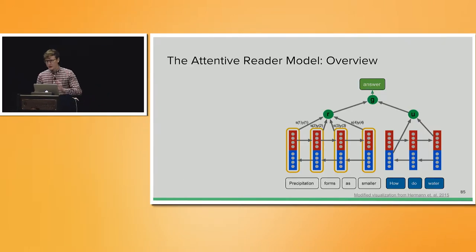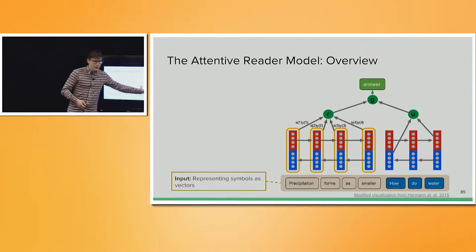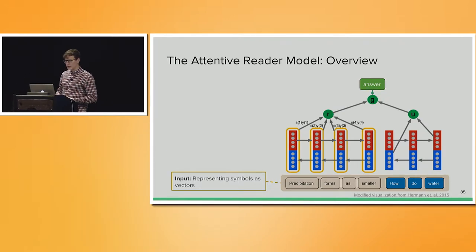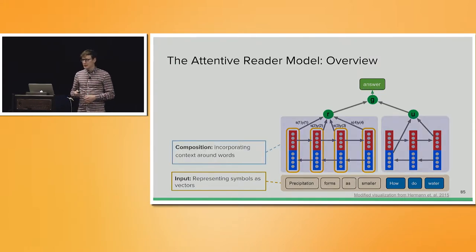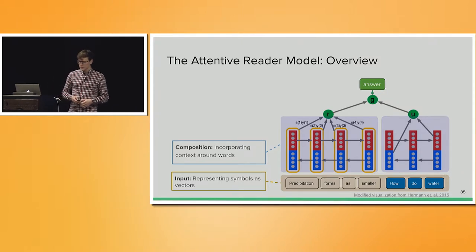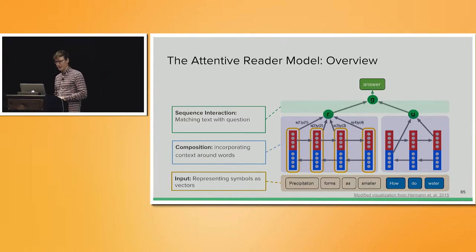Coming back to our Attentive Reader model, we see that an RNN is being used — specifically a bidirectional RNN. One of the two models goes forward and encodes the sequence from beginning to end, and the other walks backward. This composition function is used both on the given text and separately on the question that is given.